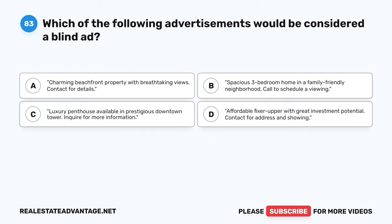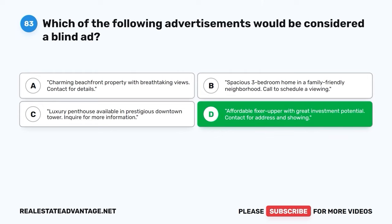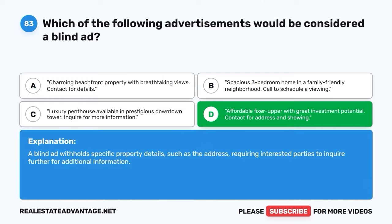Question 83. Which of the following advertisements would be considered a blind ad? A. Charming beachfront property with breathtaking views. Contact for details. B. Spacious three-bedroom home in a family-friendly neighborhood. Call to schedule a viewing. C. Luxury penthouse available in prestigious downtown tower. Inquire for more information. D. Affordable fixer-upper with great investment potential. Contact for address and showing. The correct answer is D: Affordable fixer-upper with great investment potential. A blind ad withholds specific property details, such as the address, requiring interested parties to inquire further for additional information.